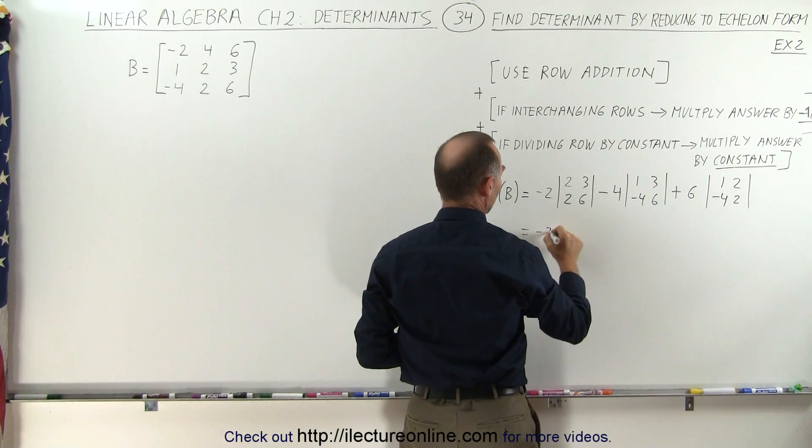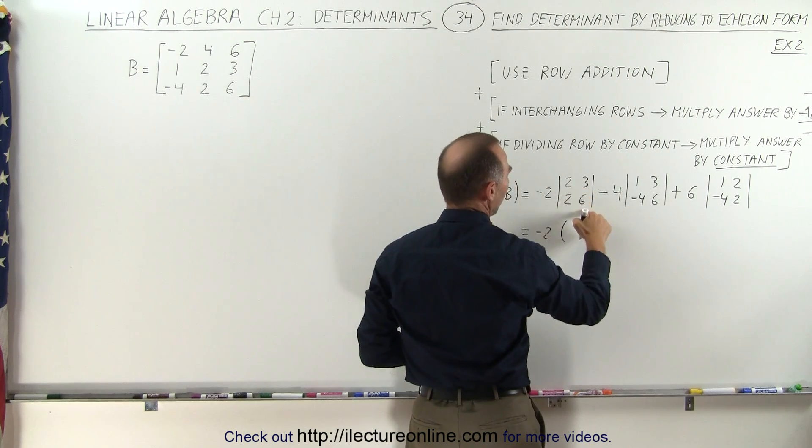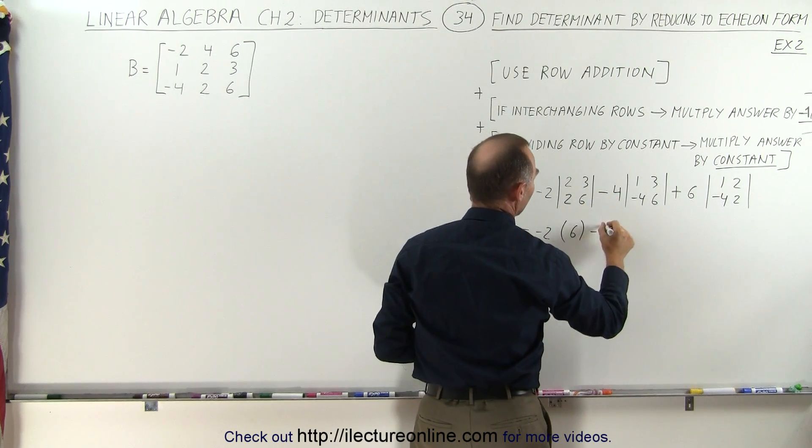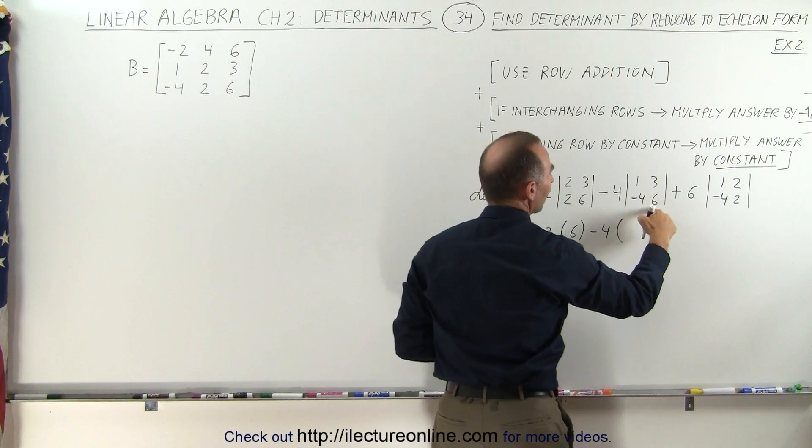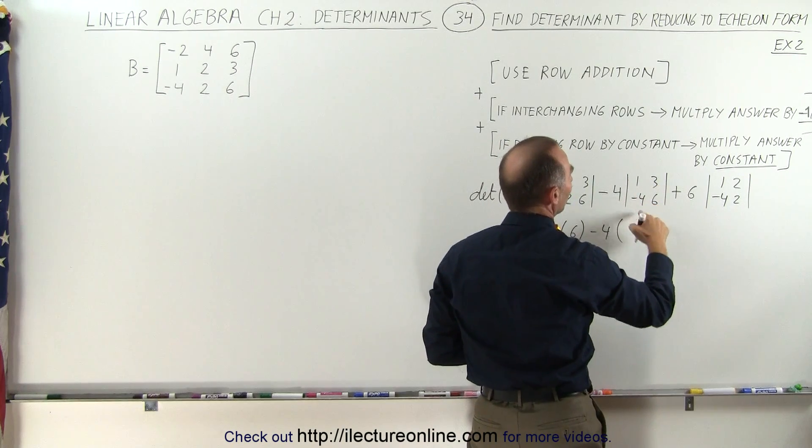Simplifying that, this gives us minus 2 times 12 minus 6, that would be 6, minus 4 times 6 minus and minus 12, that's 6 plus 12, or 18.